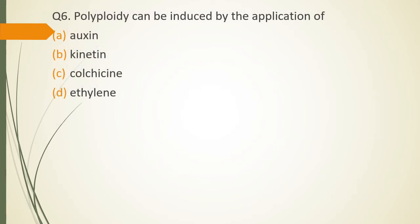Question No. 6: Polyploidy can be induced by application of Auxin, Kinetin, Colchicine, Ethylene. Polyploidy can be induced by application of which of the following chemicals? The correct answer is option C Colchicine.